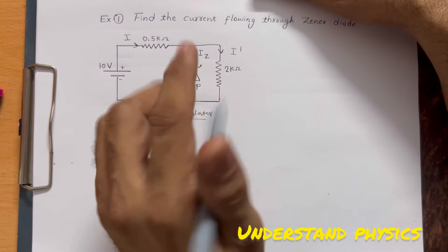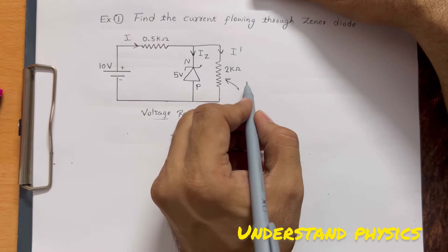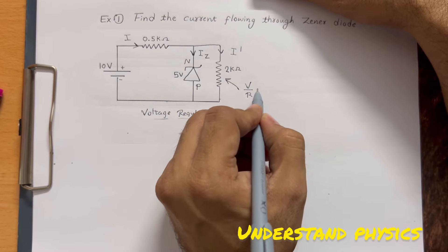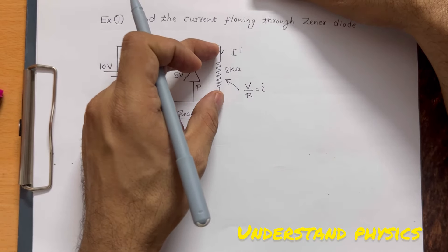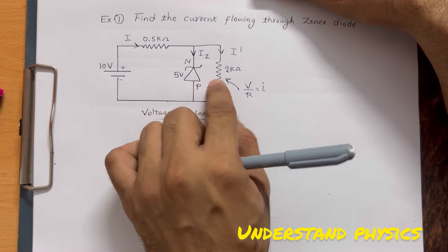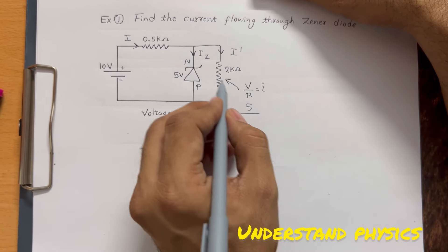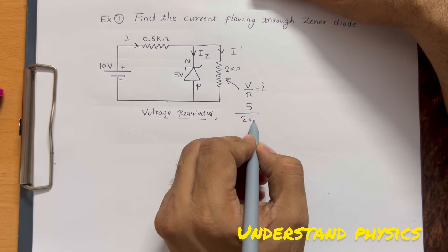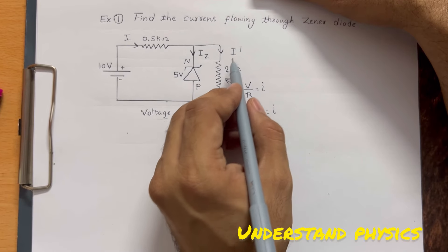Let's see how to find this. First, on this resistance, if we apply Ohm's law, V/R = I. The voltage across this resistance is also 5 volts. You can take 5 volts here because these two are in parallel. The resistance of this resistor is 2 kΩ, which is 2×10³. The current through this one I've written as I'.